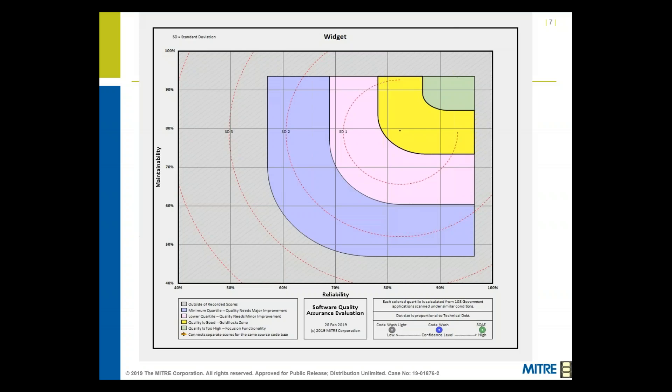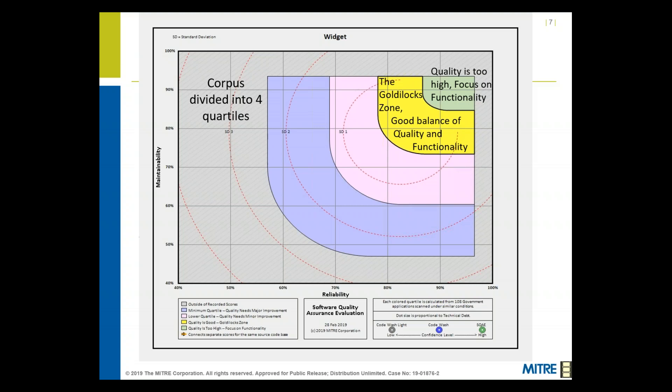The data is broken into different areas — we have a corpus divided into four quartiles. The upper right-hand side is where quality is too high and we want to focus on functionality. The vertical axis is maintainability; the horizontal axis is reliability. These are all machine-calculated so we can get repeatable results across the board. A cornerstone of a repeatable process means it has to be repeatable, public, and available for anybody to reproduce.